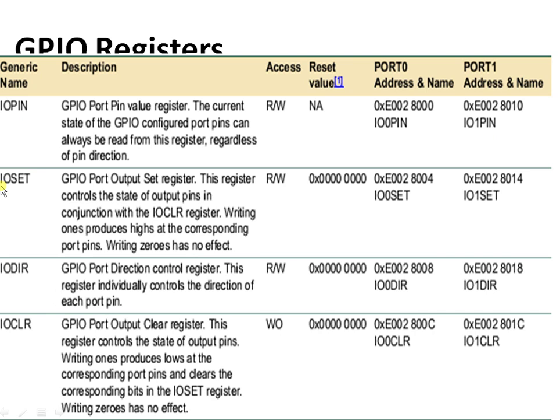The IOSET register is used for making the voltage high on a particular pin, but it cannot make that pin low. To make a pin low, we need to use another register — the IOCLR (IO Clear) register. So for setting and clearing, we have two separate registers: IOSET and IOCLR.